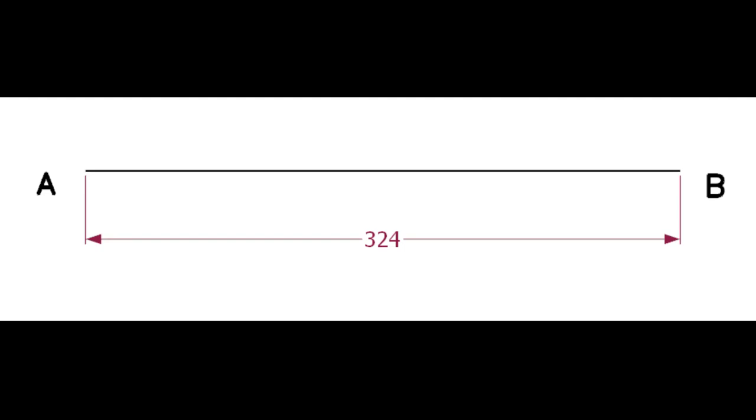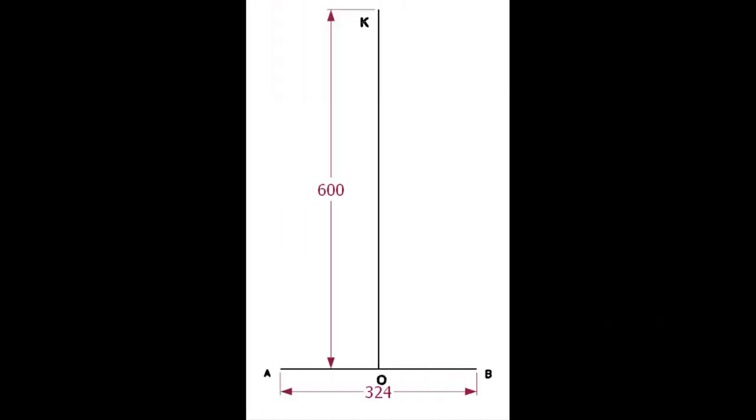Draw a line AB of length 324 millimeters, that is the OD of the pipe. Draw the line OK, the length of the line is not important, but must be more than the pipe diameter.